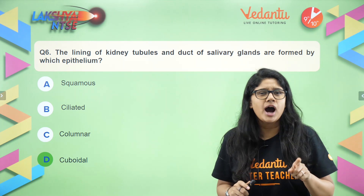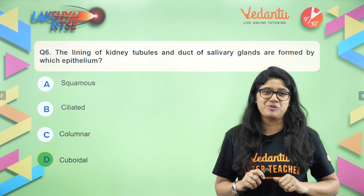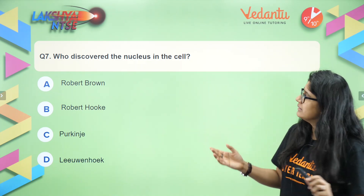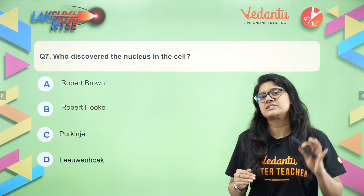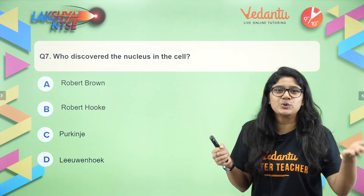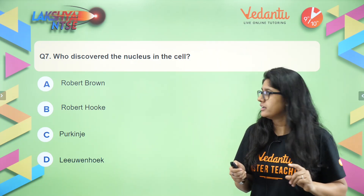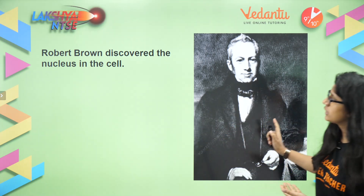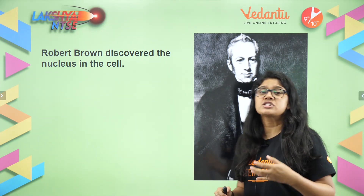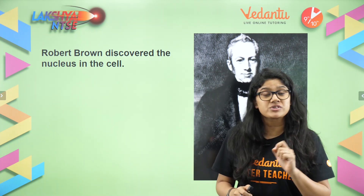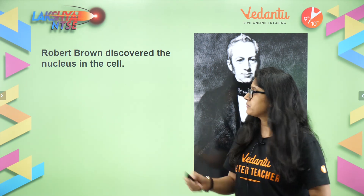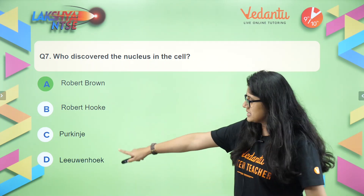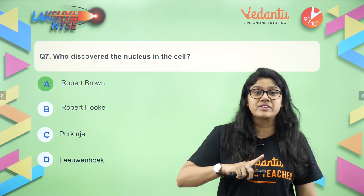I hope you're enjoying this video. If you are, please hit the like button. Question number seven. Who discovered the nucleus in the cell? A very easy question — the right answer is Robert Brown, a very famous scientist known for the discovery of the nucleus. Robert Hooke was the first person to see the cell, that too the dead cell. Leeuwenhoek was the scientist who actually saw the first living cell.